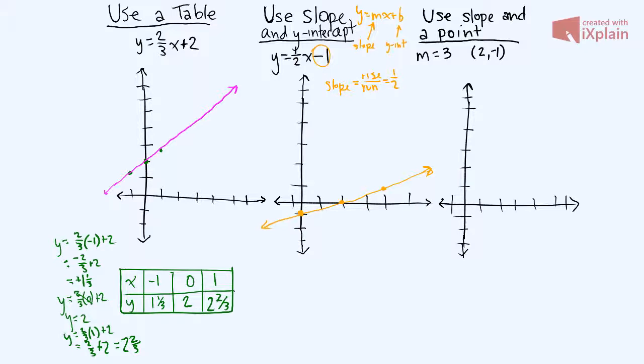Okay, the last strategy that we can use is we can use slope and a point. So if we're given slope of 3 and a point of 2, negative 1, we start with the point and we go out to negative 1. And then from that point, we use our slope.